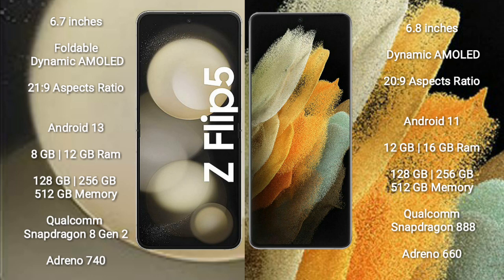Samsung Galaxy Z Flip 5 comes with 8GB or 12GB RAM and 128GB, 256GB, or 512GB internal storage, powered by Qualcomm Snapdragon 8 Gen 2 processor and Adreno 740 GPU. Samsung Galaxy S21 Ultra comes with 12GB or 16GB RAM and 128GB, 256GB, or 512GB internal storage, with a Qualcomm Snapdragon 888 processor and Adreno 660 GPU.